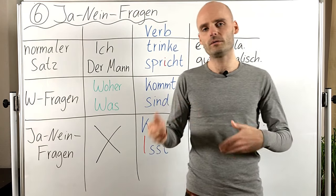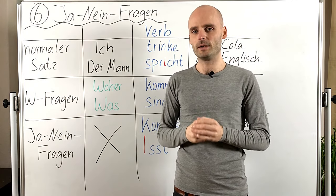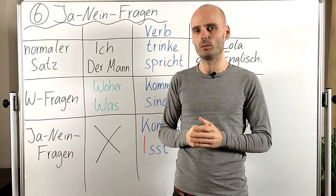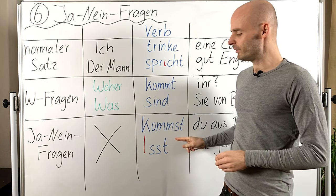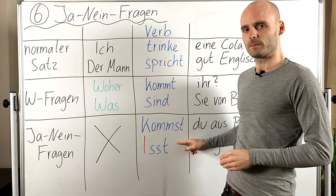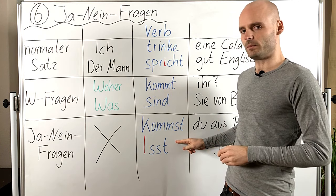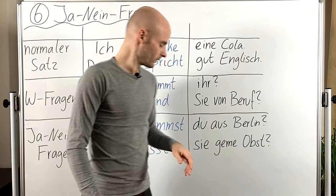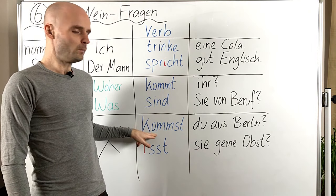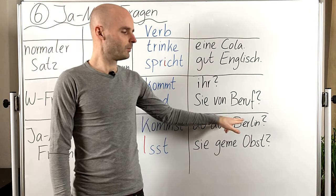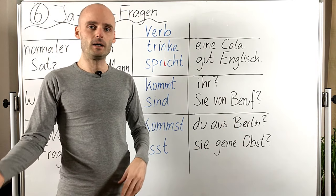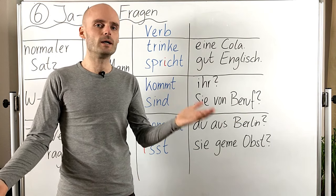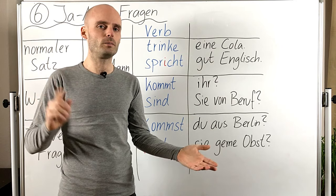So this is something we have learned already. And now, if we have yes-no questions — Ja-Nein-Fragen — dann starten wir direkt mit dem Verb. So we start straight with the verb. Kann ich sagen: Ja, ich komme aus Berlin. Oder: Nein, ich komme nicht aus Berlin.